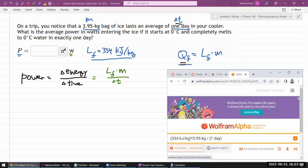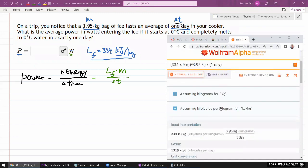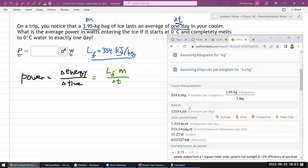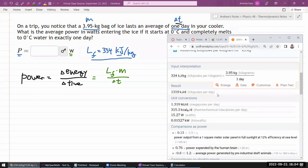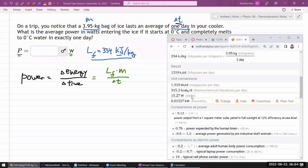And I type enter. It will do the calculation. When you use Wolfram Alpha, I do recommend that you always check that it interpreted your input correctly. Sometimes it thinks you meant one thing, and you didn't mean that. That looks right. It's kilojoules per day. Okay, I don't want that. There it is. Watt. 15.27 Watt.